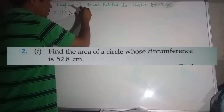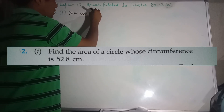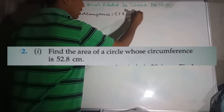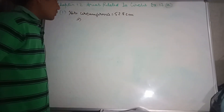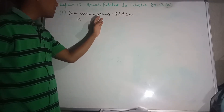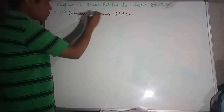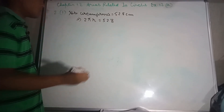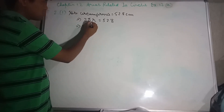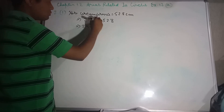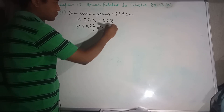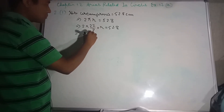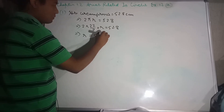Here, circumference is equal to 52.8 cm. This implies: the circumference formula is used here. The perimeter — circumference — equals 52.8 cm.